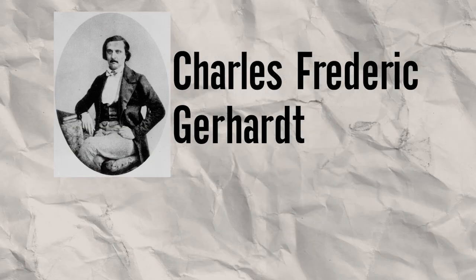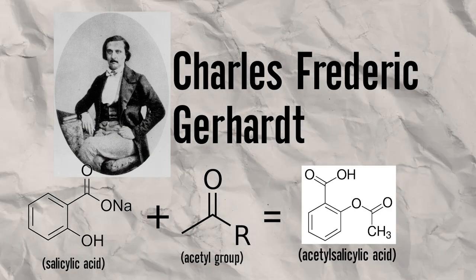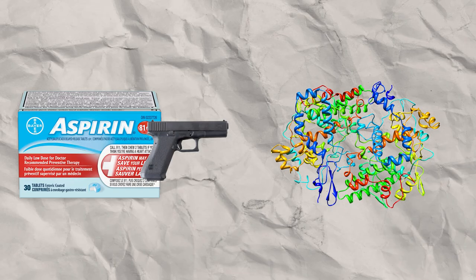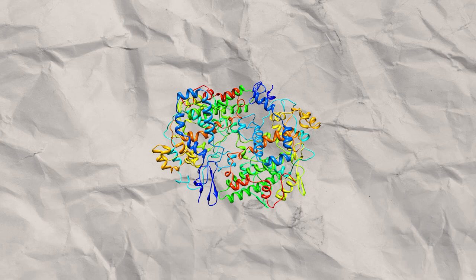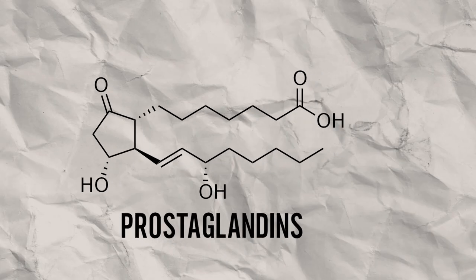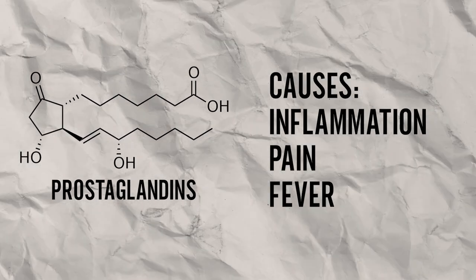Finally, scientists acetylated the acid to form acetyl salicylic acid, also known as aspirin. It was proven that the acid targets an enzyme called cyclooxygenase, which produces hormones called prostaglandins. It is this hormone that causes inflammation, pain, and fever. And all of that is aspirin's mechanism of action.